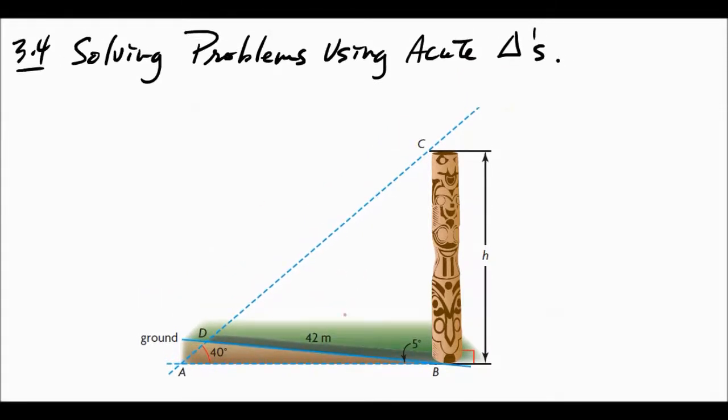So this is 5 right here, and this is 40. So you're saying that we could actually label this right here as 85. Very good. So we've got, this is 85, and we don't know this angle or this angle yet. Again, we're trying to find the height. So can we find these pieces, or, you know, what do we want to find first?